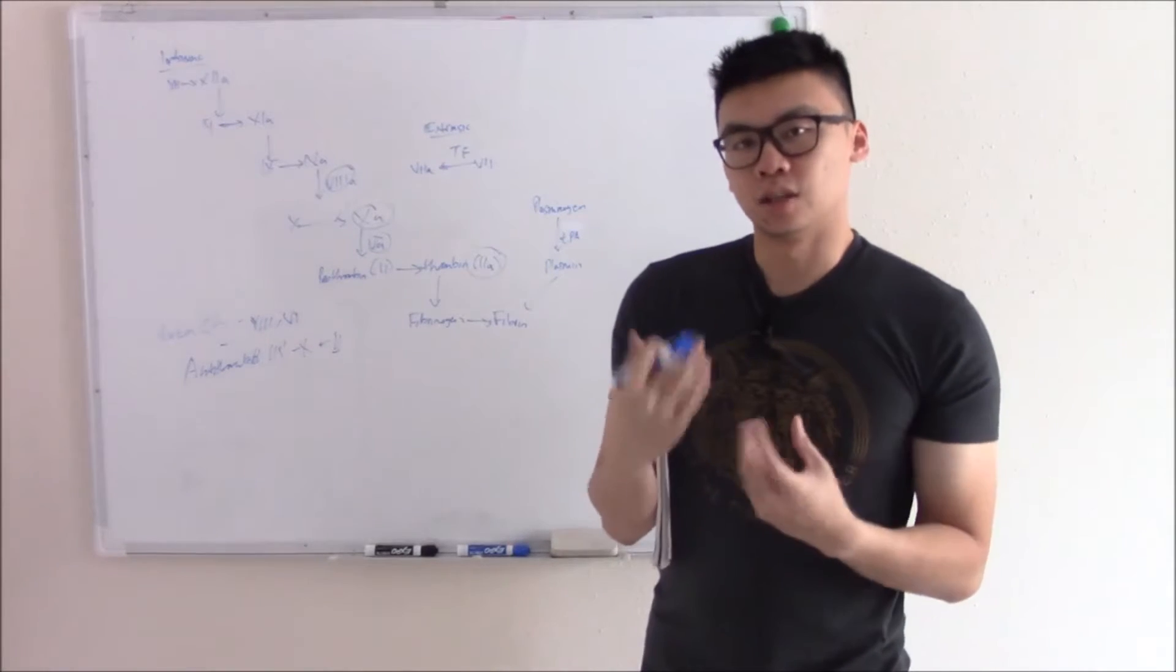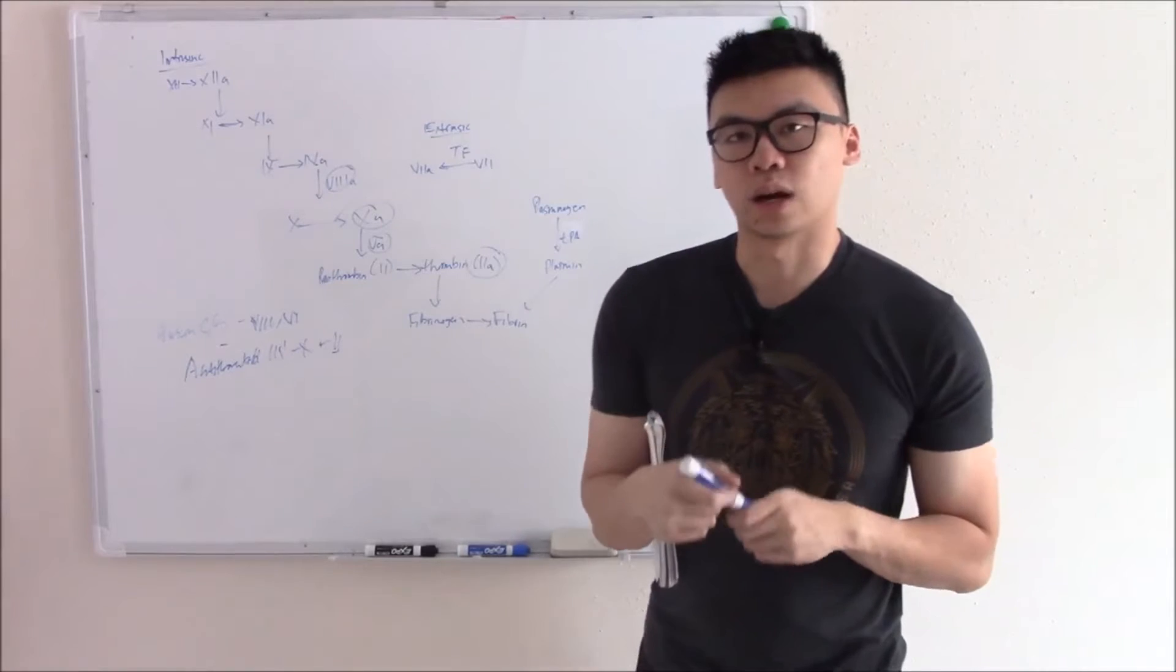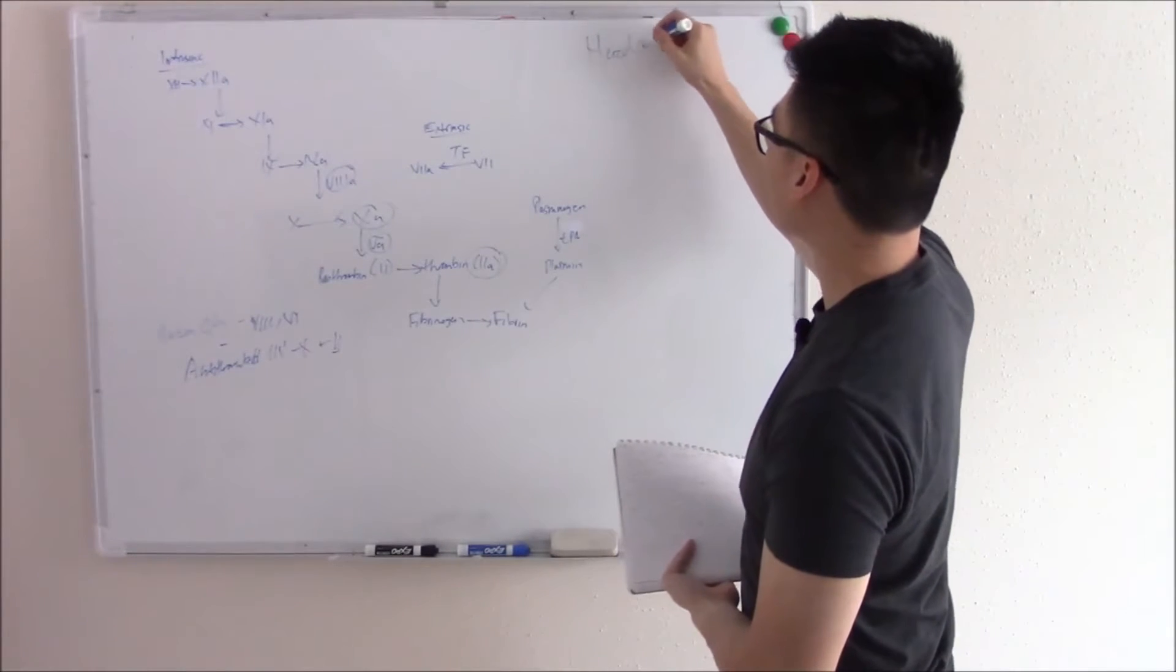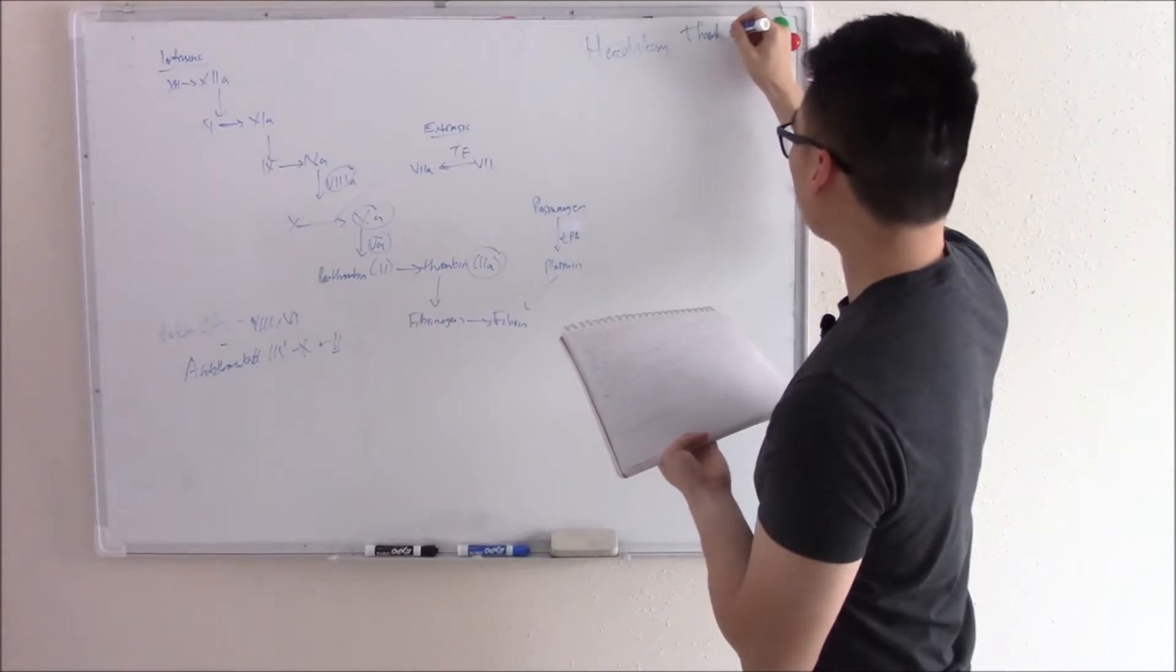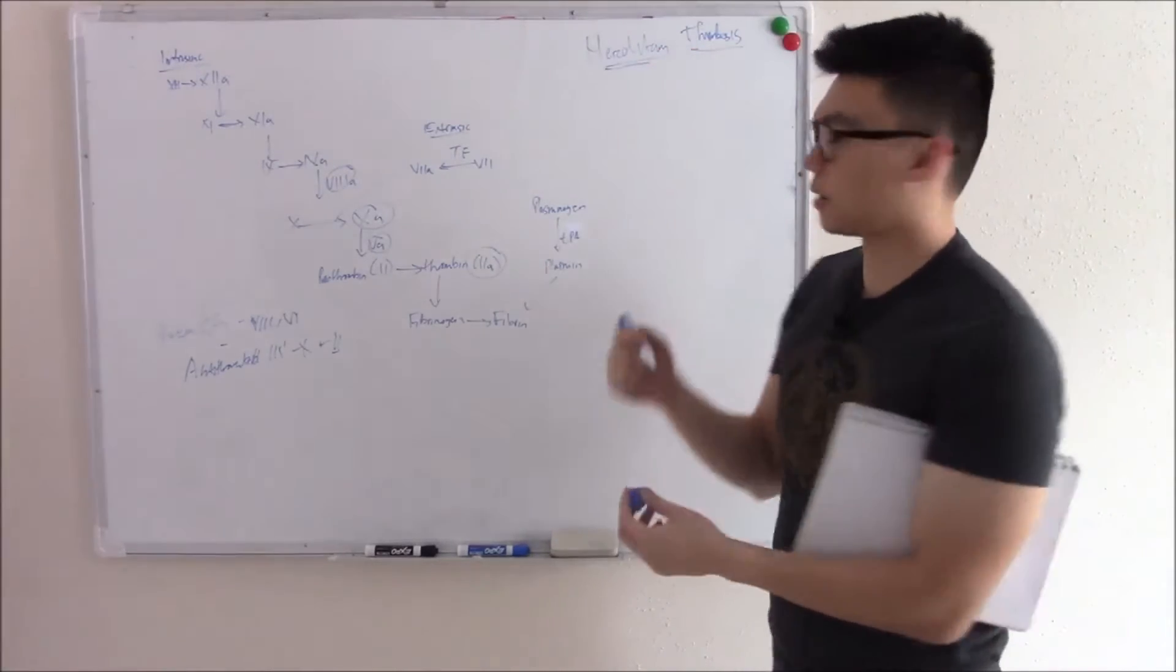Those are just the things that regulate it. Now just a recap, now to the meat of our discussion, and that is what disorders can cause increased coagulation factors. These disorders are called hereditary thrombosis syndromes. So judging by name, a lot of them are hereditary, so you inherit them.